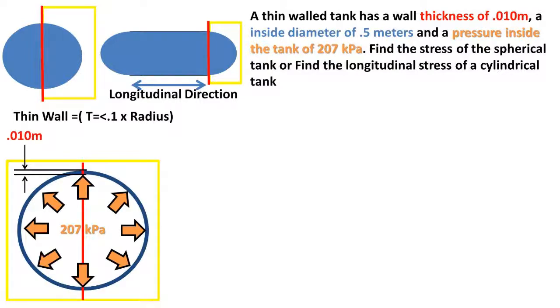In order for the formulas I will be using to work, the wall thickness must be less than one-tenth the radius of the pressure vessel. This classifies it as a thin-walled pressure vessel.